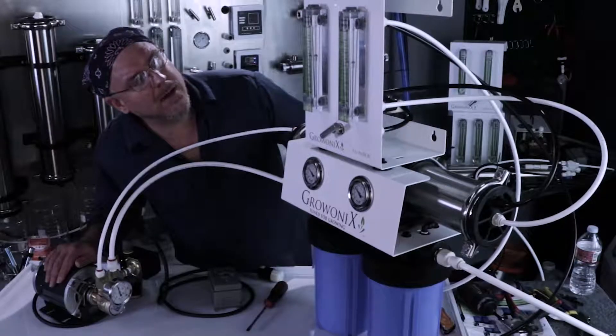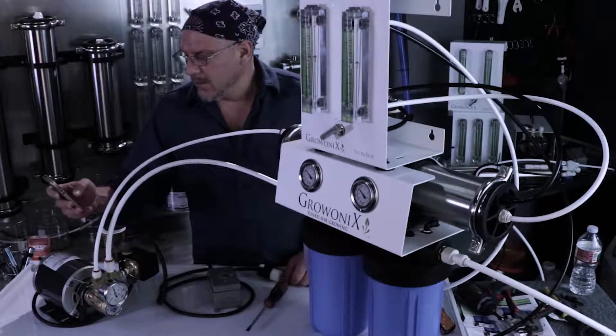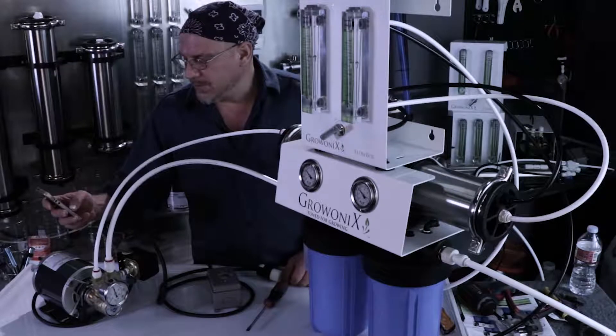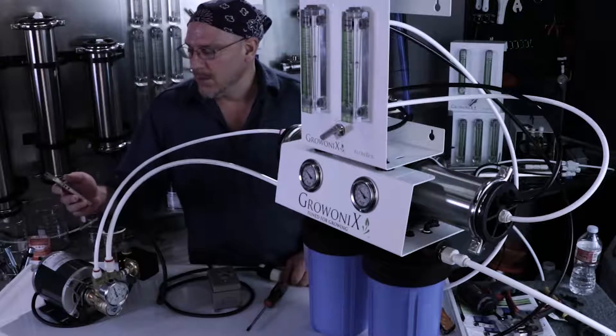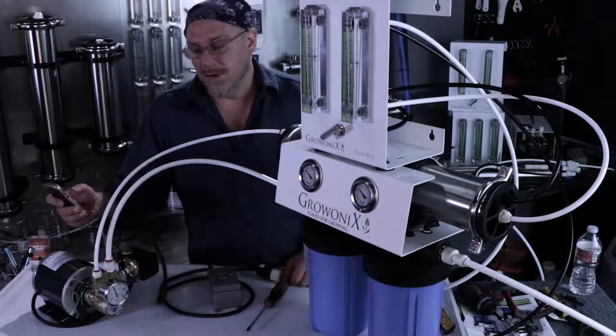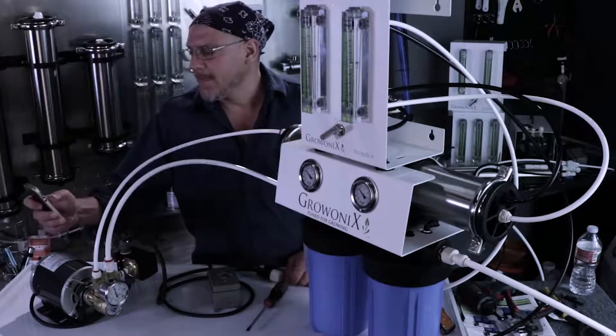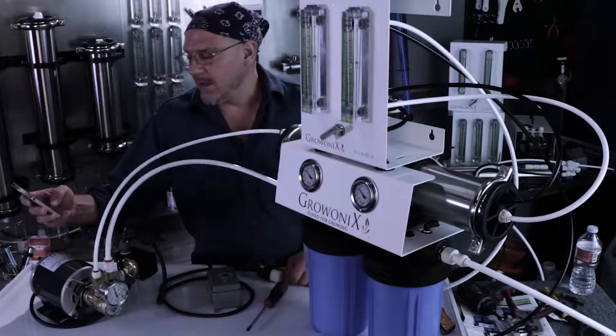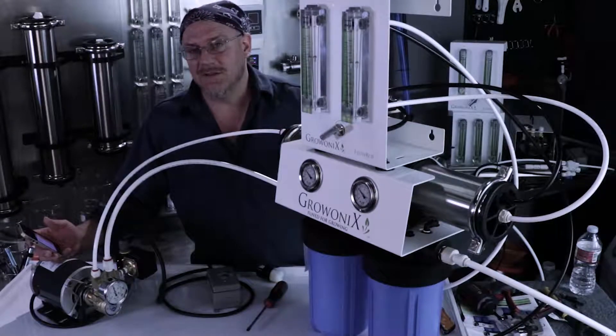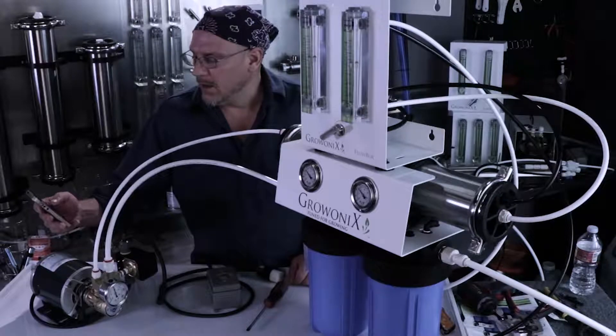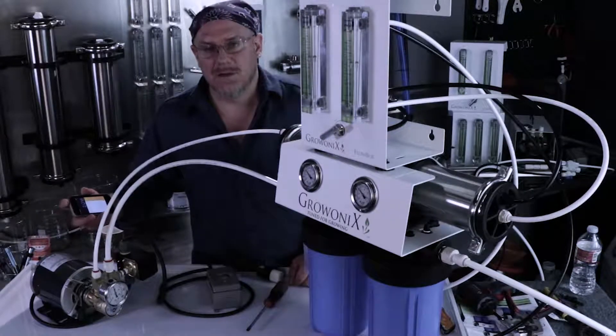We're putting out about 1.2 gallons a minute, and 1.2 times 1440 is about 1728 gallons per day. If I was running at 150 psi, which I'll be able to do when this water cools down in a few weeks, we'll be just over 1.4 gallons a minute on a brand new GXM 1000 HF high flow membrane, and that'll bring us to just over 2,000 gallons per day.